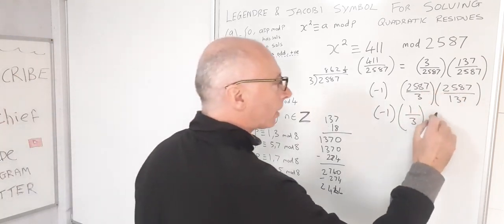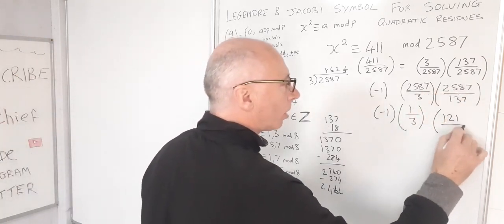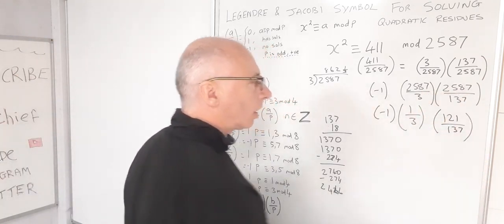Okay, so therefore left over in here I've got 121. So if I subtract that from that, so now I've got 121 over 137.